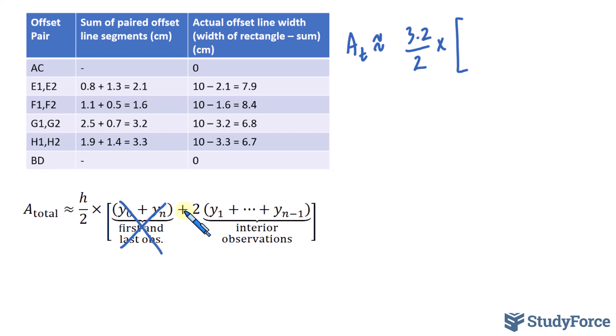Then, it's being added to 2 times all the interior observations. What this means is the ones that we found other than the first and the last. They will get summed up and eventually multiplied all to 2.